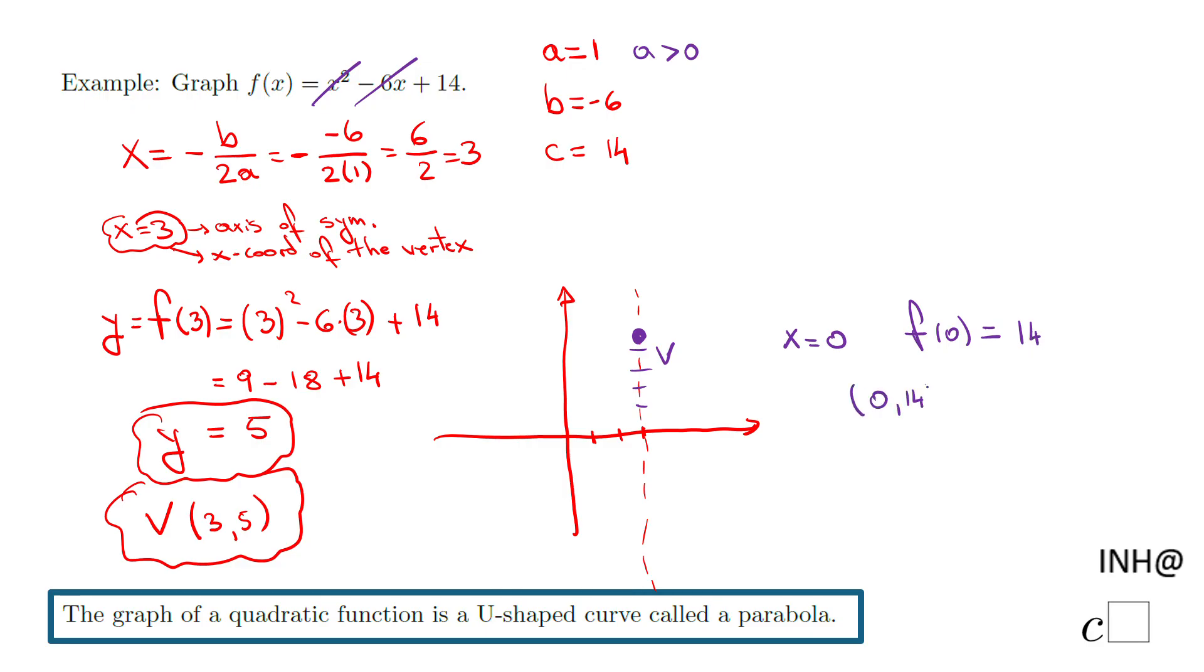So the y-intercept is 0, 14, which if you look here, that's a problem even for me. 1, 2, 3, 4, 5, 6, 7, 8, 9, 10, I mean somewhere here. Okay, that's going to be the graph. And I can reflect that point and get a similar point right here.